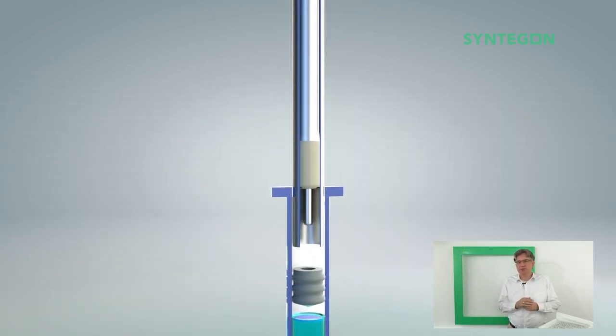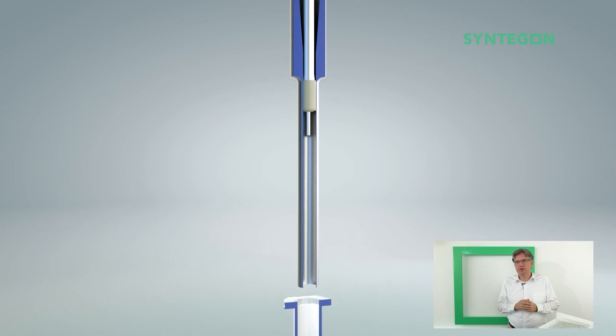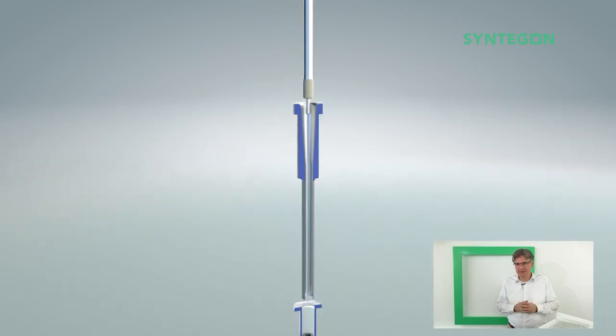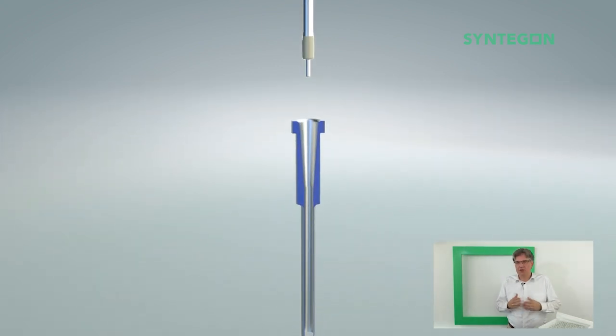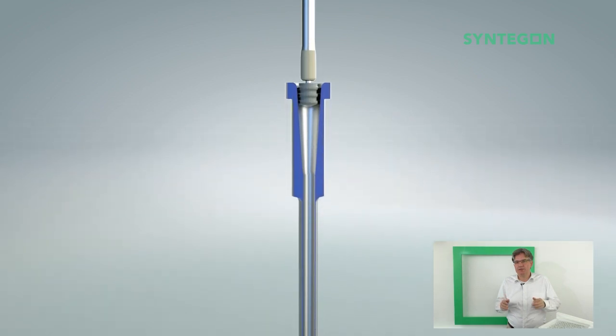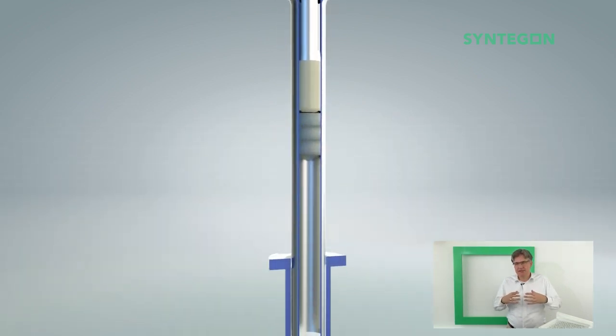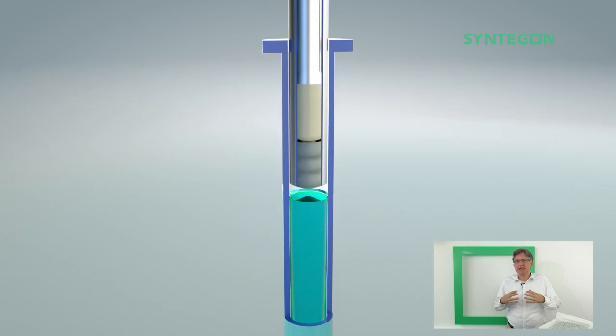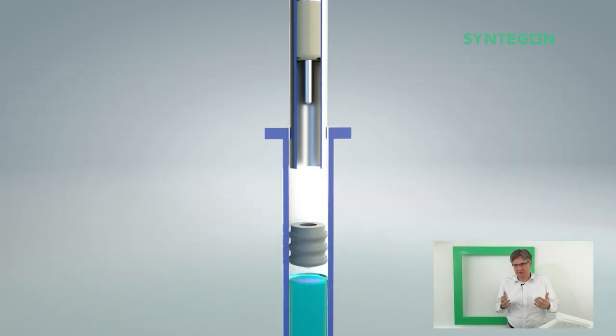So you see here the rubber stopper is going into the vent tube and is compressed. And then the rod is pushing the stopper out, and the stopper is deflating and is sealing the syringe.